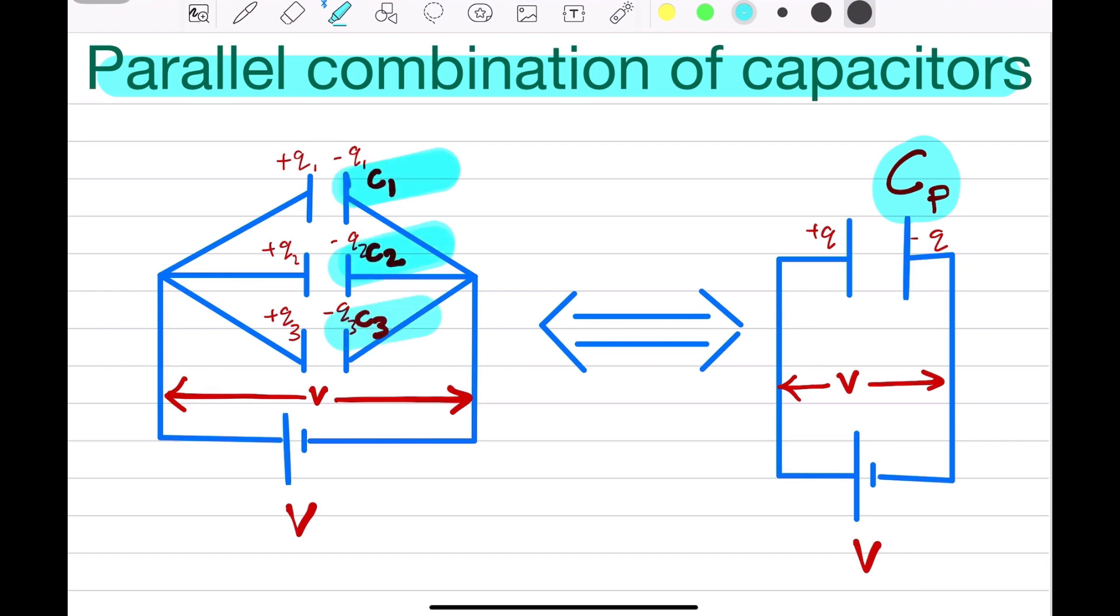Now, we will consider three capacitors C1, C2, and C3. They are connected in parallel such that potential difference across the three capacitors is same.